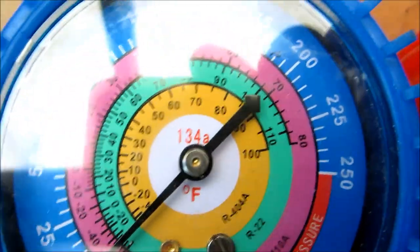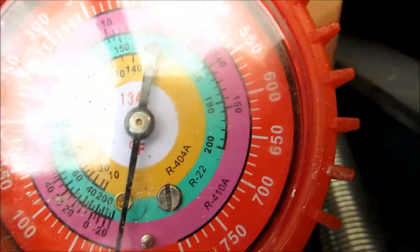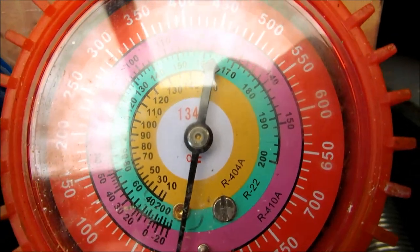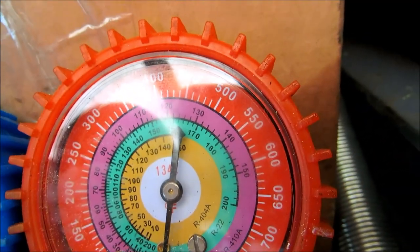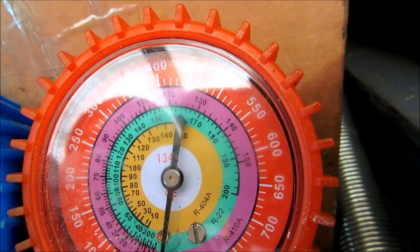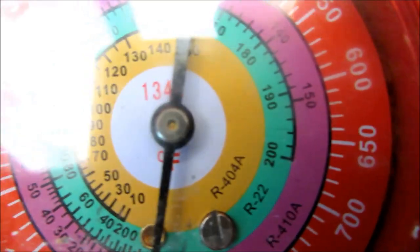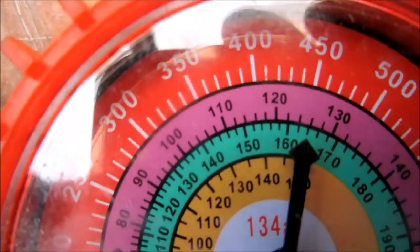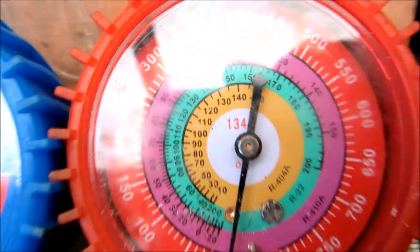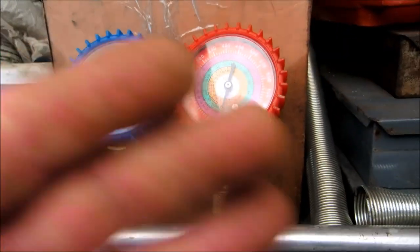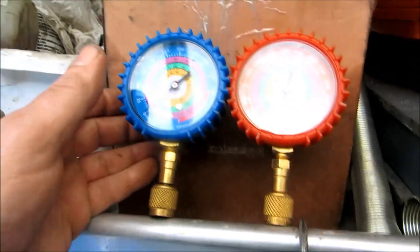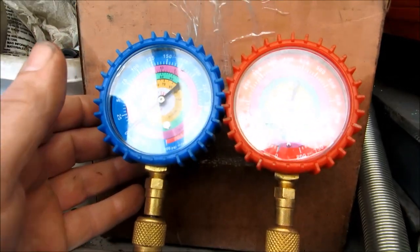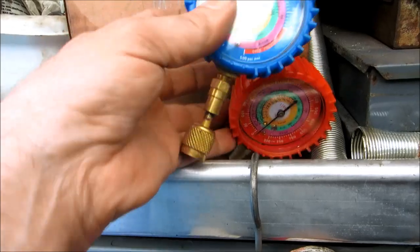This one's 410a, same thing, pressure temperature chart right there. Here's a couple other ones, this one's got 410a and R-22 on this one. You can see it's got the pressure temperature chart on there also. I always just refer to the PT chart. Get yourself a chart at any supply house, that's really the better way of doing it.